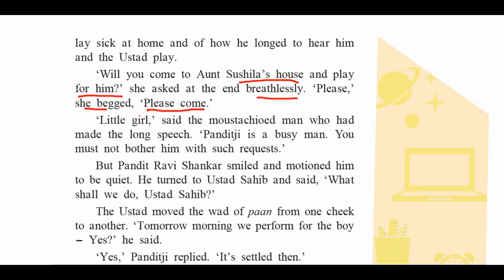The mustachioed man who had made the long speech said, 'Little girl — Pandit Ji is a busy man, you must not bother him with such a request.' But Pandit Ravi Shankar smiled and motioned him to be quiet. He turned to Ustaz Sahib and said, 'What shall we do, Ustaz Sahib?' This showed something positive — Pandit Ravi Shankar asked Ustaz Sahib what to do.